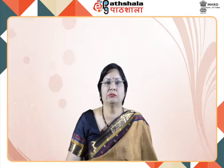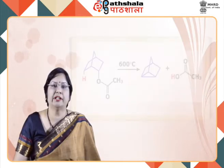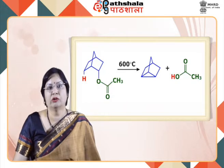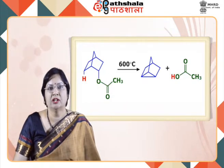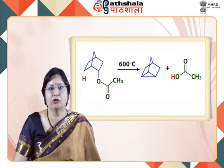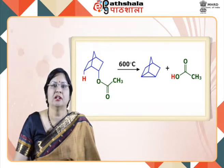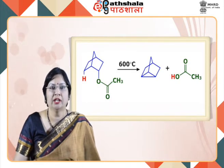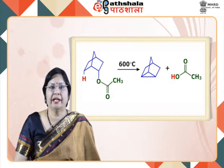Let us now see what are 1-3 and 1-N pyrolytic eliminations. In 1-3 elimination, the two groups lost are from the relative first and third carbon atoms. As you can see in the example, the OCO-CH3 group and H are lost from the 1,3 positions, resulting in a new three-membered cyclic ring, with CH3COO and H lost as acetic acid. Similarly, you can have 1-4, 1-5 eliminations, and so in general they are called 1-N pyrolytic eliminations.